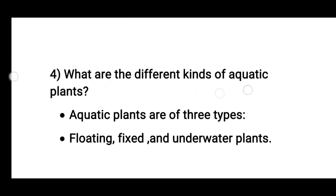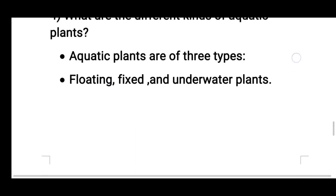Question number four: What are the different kinds of aquatic plants? Aquatic plants are of three types: floating plants, fixed plants, and underwater plants.